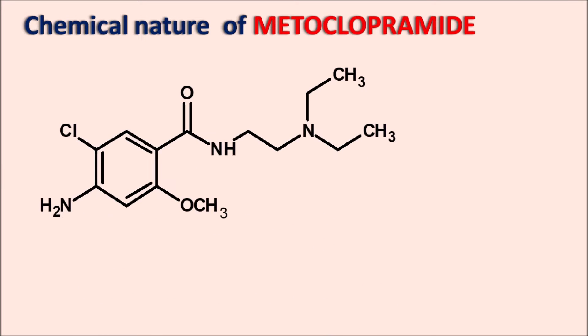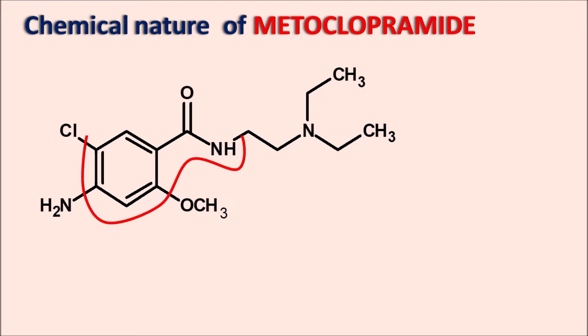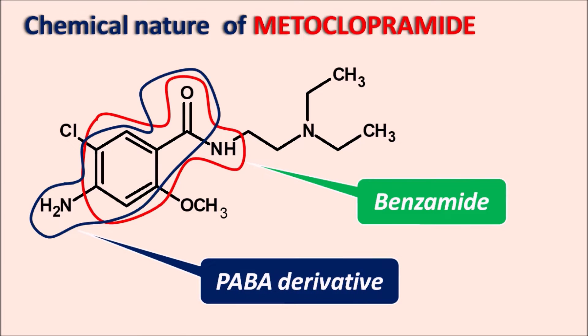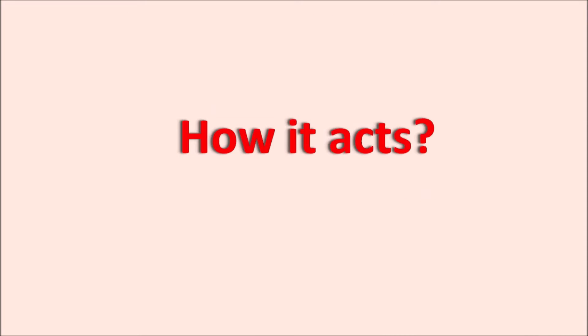Metoclopramide is a benzamide derivative. Within its structure we can observe the benzamide moiety, and we can also observe another moiety — para-aminobenzoic acid (PABA). So metoclopramide is a PABA derivative, and because of this PABA analog nature, metoclopramide can produce a few hypersensitive reactions.